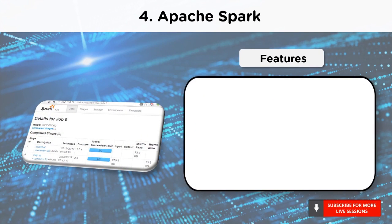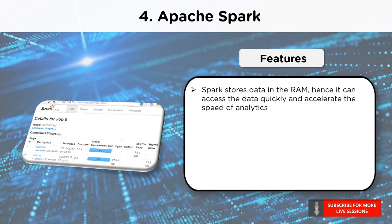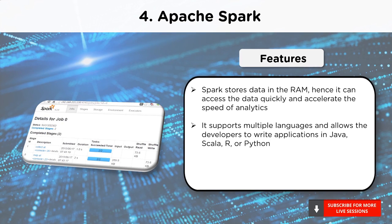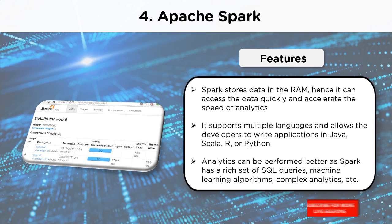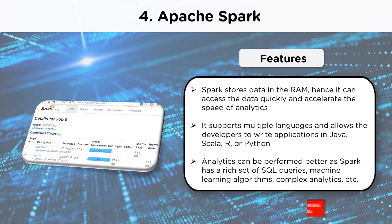Now let's look at the important features of Apache Spark. Spark stores data in the RAM, hence it can access the data quickly and accelerate the speed of analytics. Spark helps to run an application in a Hadoop cluster up to 100 times faster in memory and 10 times faster when running on disk. It supports multiple languages and allows the developers to write applications in Java, Scala, R or Python. Spark comes with 80 high-level operators for interactive querying. Analytics can be performed better as Spark has a rich set of SQL queries, machine learning algorithms, complex analytics, etc. Apache Spark provides fault tolerance through Spark RDD — Resilient Distributed Datasets — designed to handle the failure of any worker node in the cluster, ensuring that the loss of data reduces to zero.